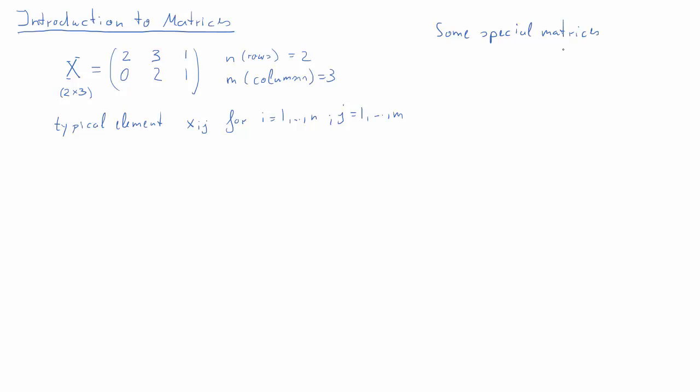We will have to deal with some special matrices. I will introduce two in particular. Firstly, what is called a null matrix, and that is basically what it says: it's a matrix full of zeros. Here we have in particular a 2 by 3 null matrix, but it could have any dimension.